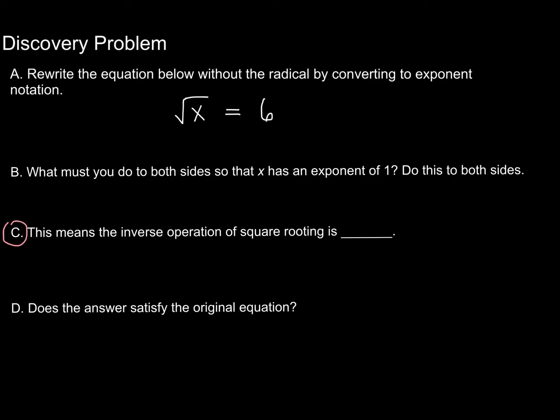Alright, so pretty simply, for part A, I want to rewrite this as x to the 1 over 2, since there is, of course, an index here of 2 that's not written.